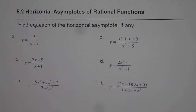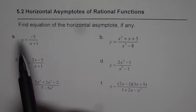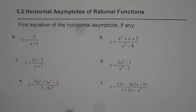I am Anil Kumar and in this video I will explain how to find the equation of a horizontal asymptote for any rational function. There are basically three cases, and with the help of these six examples we will consider all three cases. The question before us is: find the equation of the horizontal asymptote, if any, for these equations.